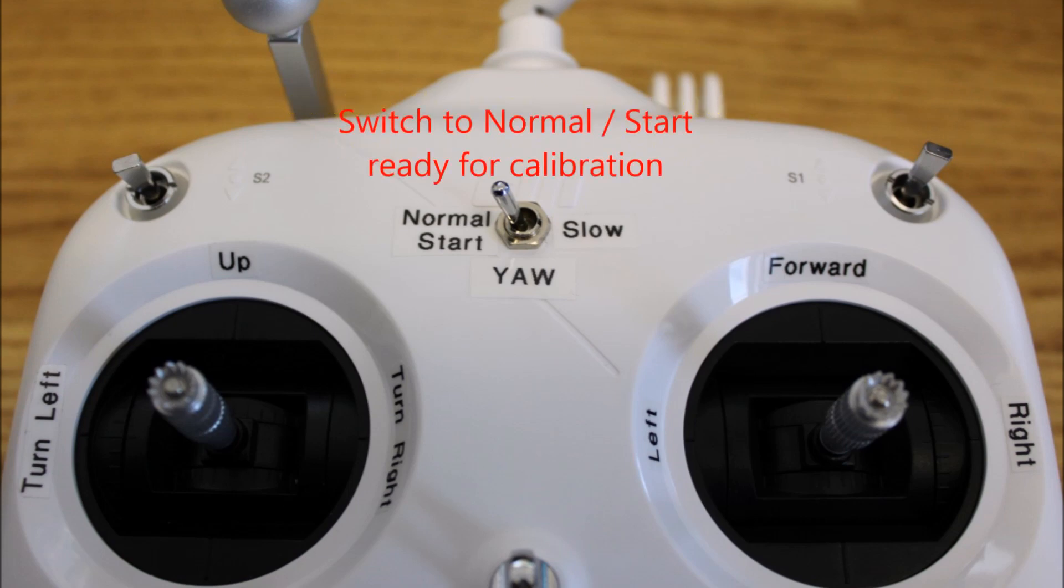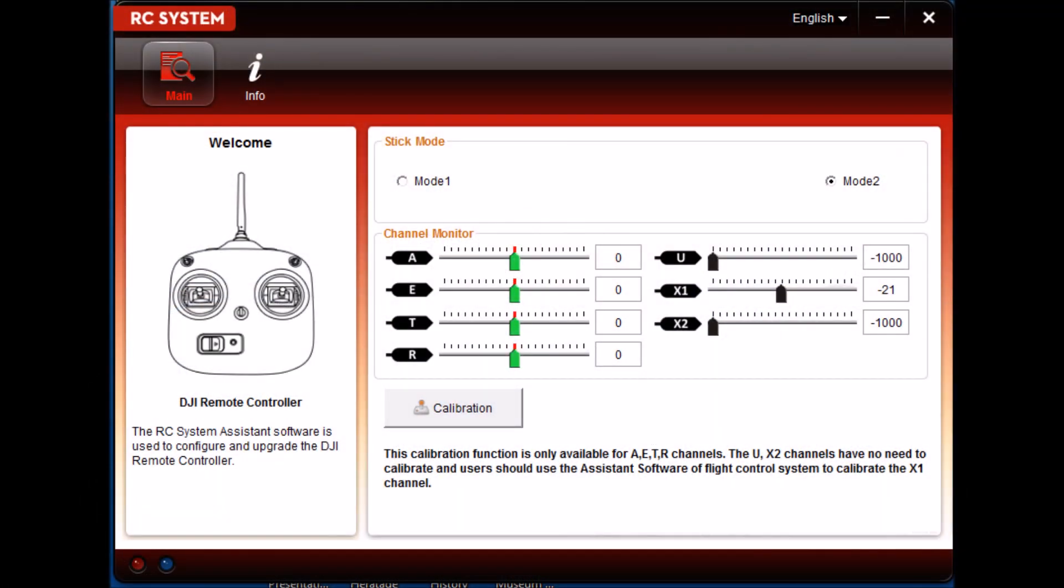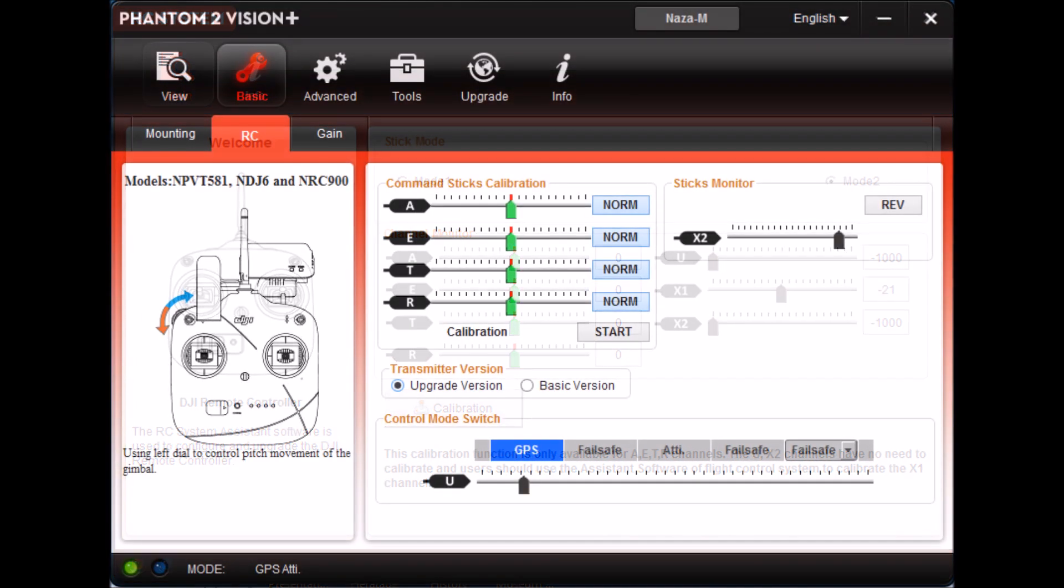It is advisable now to use the RC system assistant and the Phantom 2 vision assistant to do both calibrations in that order. Once the calibrations have been completed...